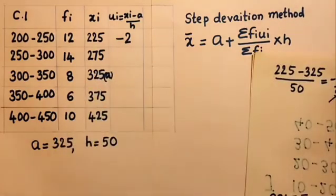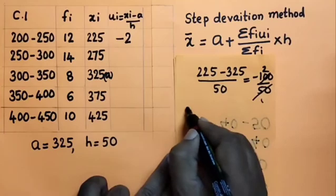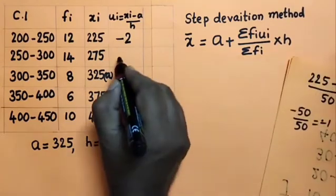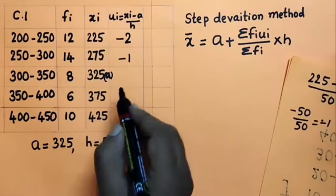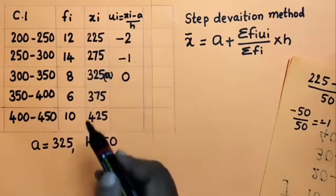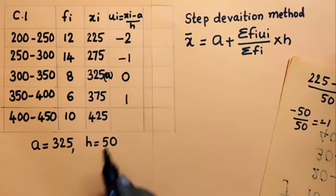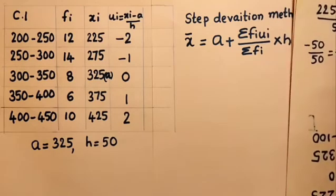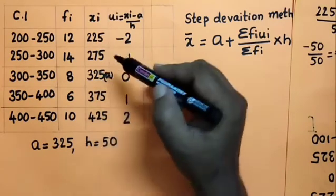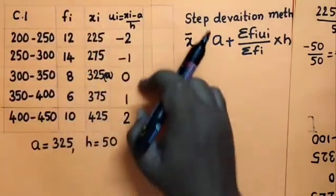Continuing: for xi = 275, ui = −1. For xi = 325 (the assumed mean a), ui = (325 − 325) / 50 = 0 / 50 = 0. For xi = 375: ui = (375 − 325) / 50 = 50 / 50 = 1. For xi = 425: ui = (425 − 325) / 50 = 100 / 50 = 2.